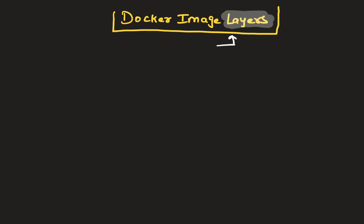Before we directly talk about layers, what is a Docker image? A Docker image you can think of as a stopped container — it's a template of a container using which you can create a container. And how is a Docker image created? It is created using a Dockerfile.